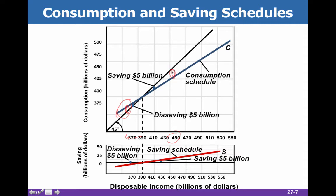Since consumption and saving are functions of each other, when both are zero they're equal, and DI minus C equals S — so any point on the consumption schedule has a corresponding point on the savings schedule.